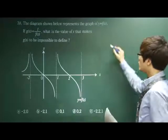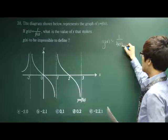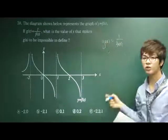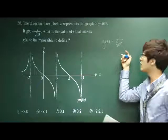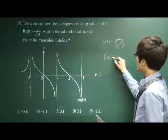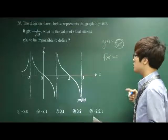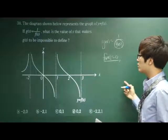When g(x) function is equal to one over f(x) function, when g(x) function is impossible to define, then the denominator got to be equal to zero. Whatever makes f(x) zero will make g function impossible to define. Therefore, let's find when f(x) is equal to zero.